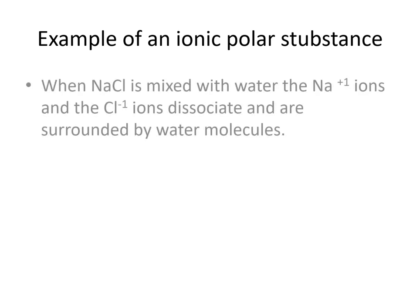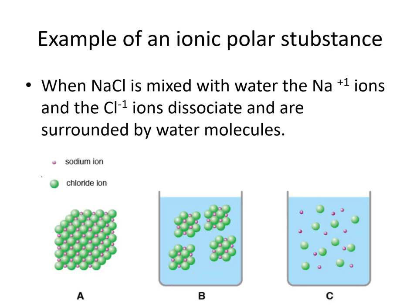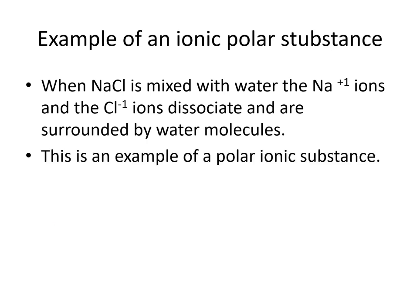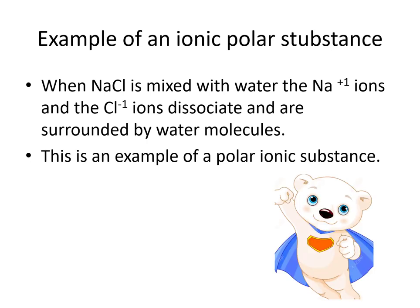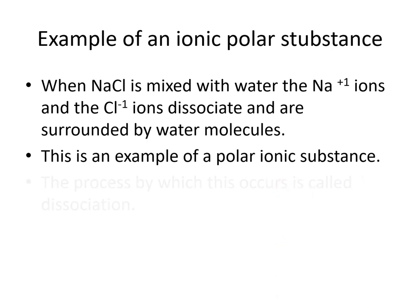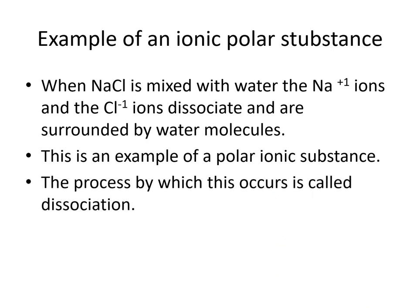An example of an ionic electrolyte would be sodium chloride. When sodium chloride is mixed with water, the positive sodium ions and the negative chloride ions dissociate and are surrounded by water molecules and pulled apart. I'm calling it a polar ionic substance because being ionic is like being super polar — so polar that you are no longer polar, you are ionic. The process by which this happens is called dissociation, an important vocabulary word we'll carry through this entire section.